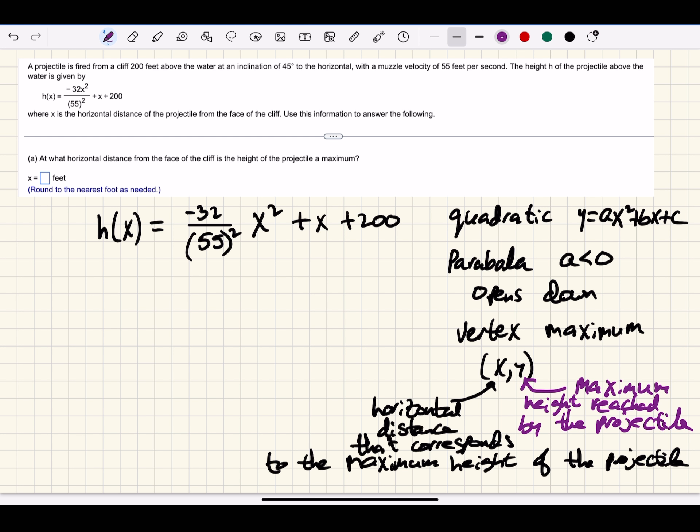In a case like this, I would probably use the formula: the x coordinate of the vertex can be found by dividing the opposite of b by 2 times a. b is the coefficient on the linear term, which here is an understood one. a is the coefficient on the term of highest degree, so -32/(55²). So the x coordinate of the vertex, or the horizontal distance that corresponds to the maximum height, would be -1 / [2 × -32/(55²)]. Rounding to the nearest foot, our approximation of this horizontal distance would be 47 feet.